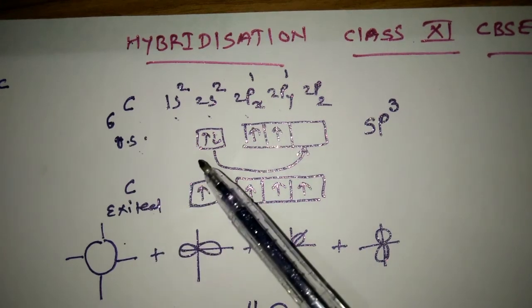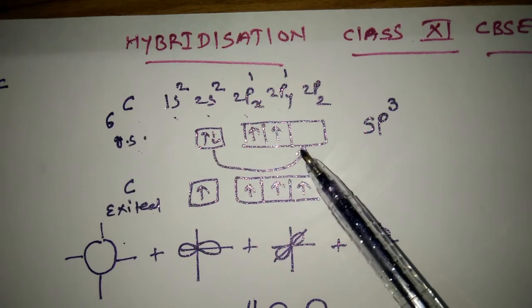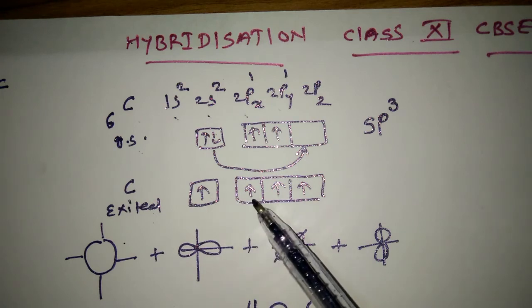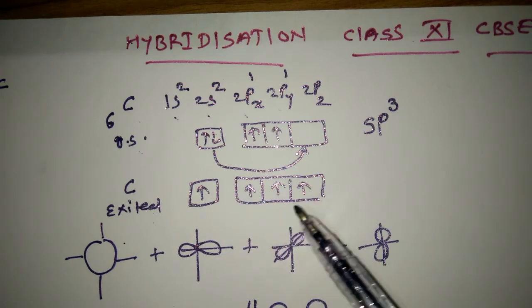In excited state, one electron of 2s shifts to 2pz. Now in excited state: 2s1, 2px1, 2py1, 2pz1.